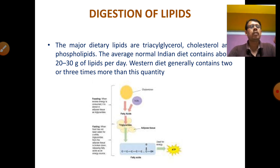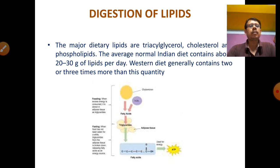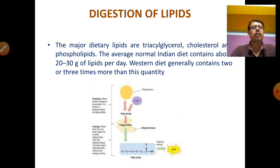First, digestion of lipids. The major dietary lipids are triglycerides, cholesterol, and phospholipids obtained from the diet. The average normal Indian diet contains about 20 to 30 grams of lipid per day, but European diets contain two to three times this amount. Basically the diet source contains fatty acids and triglycerides, which are ultimately all converted into fatty acids after digestive enzymes.